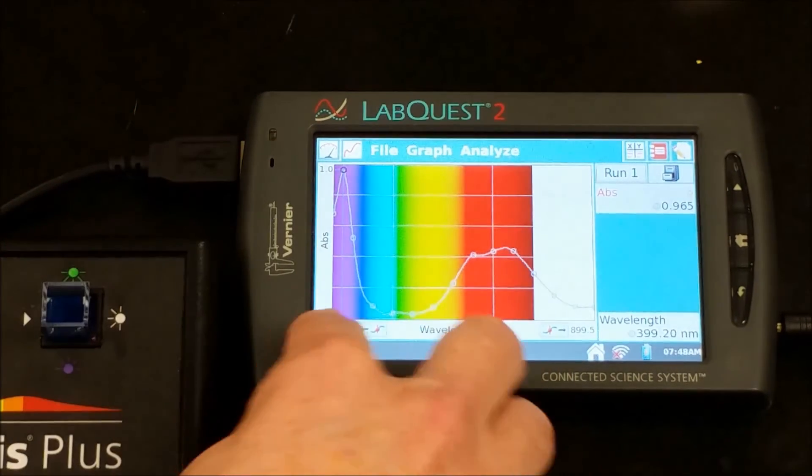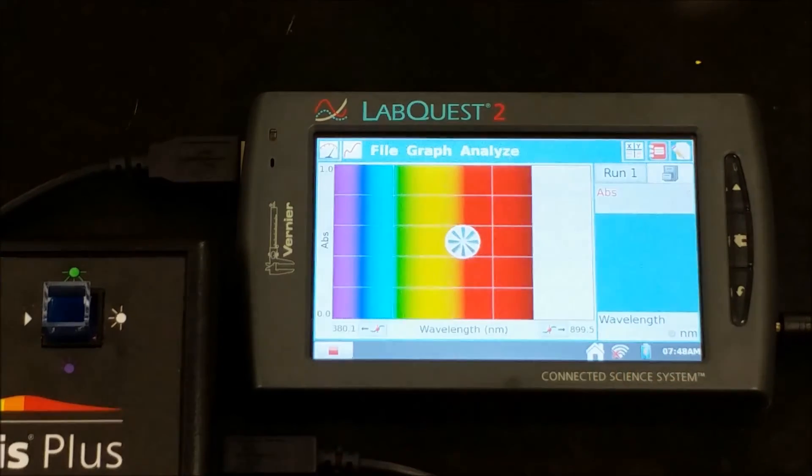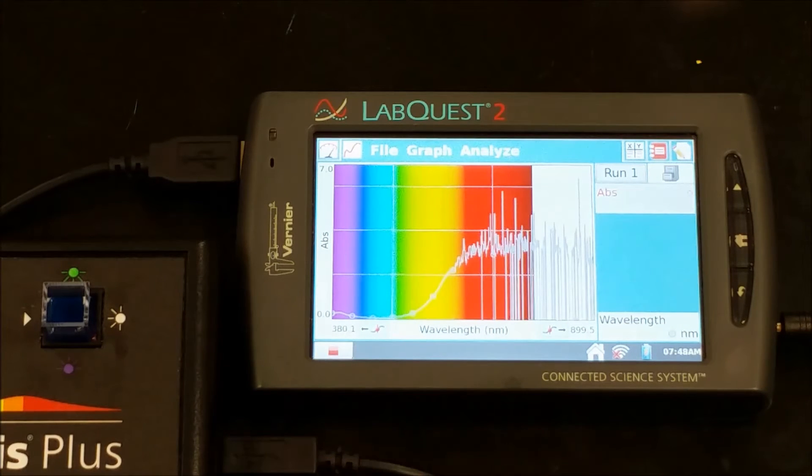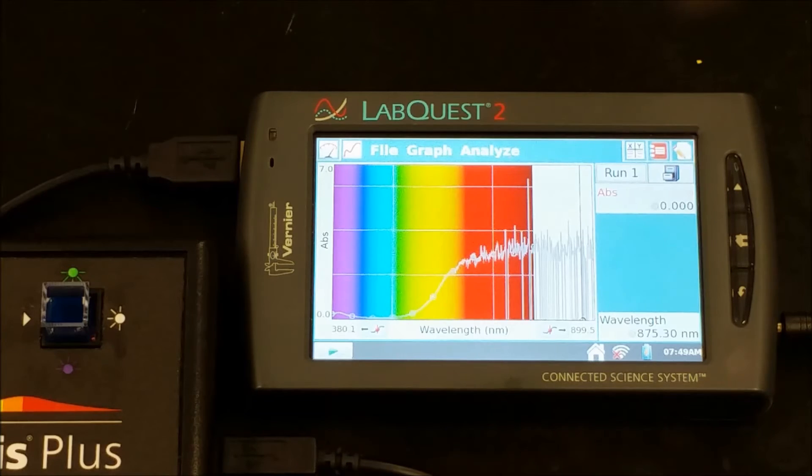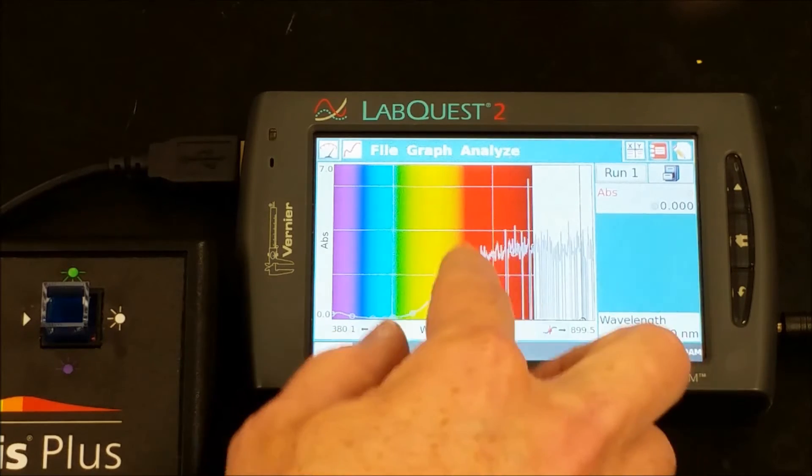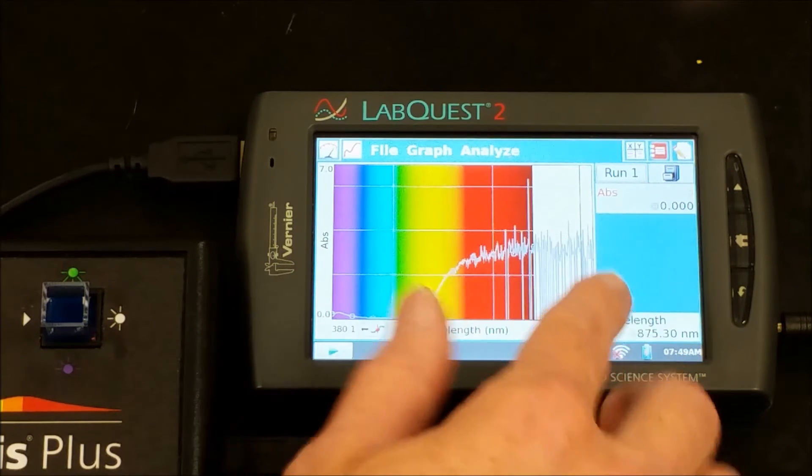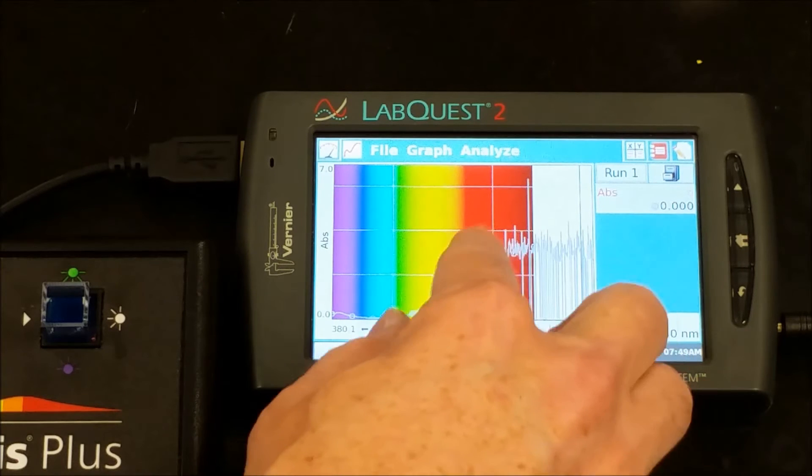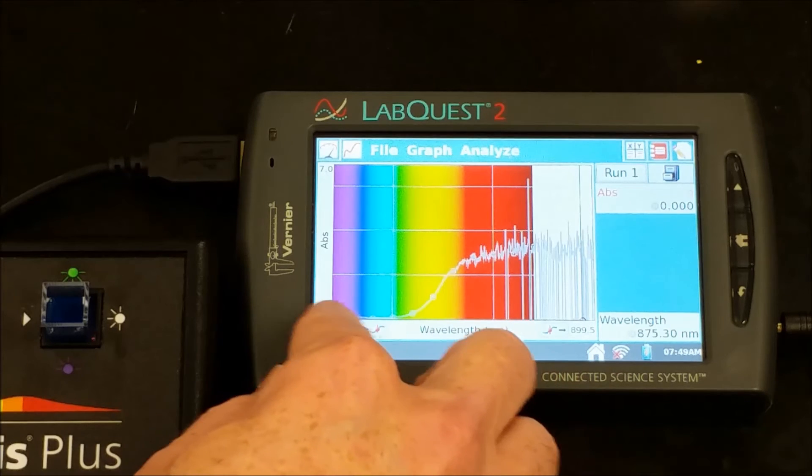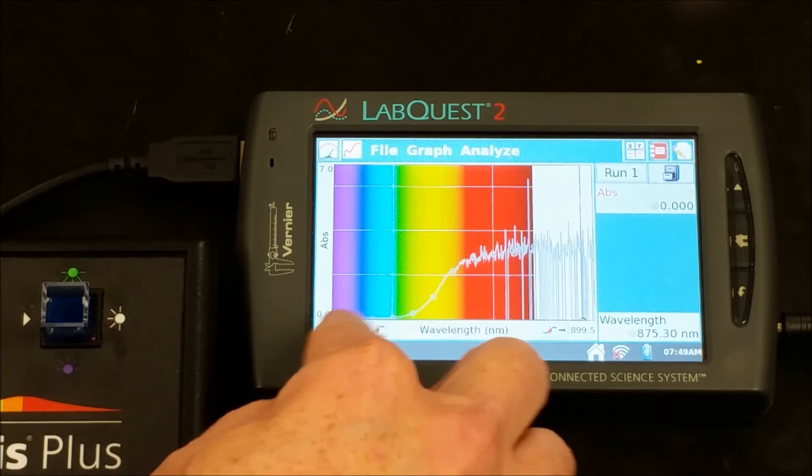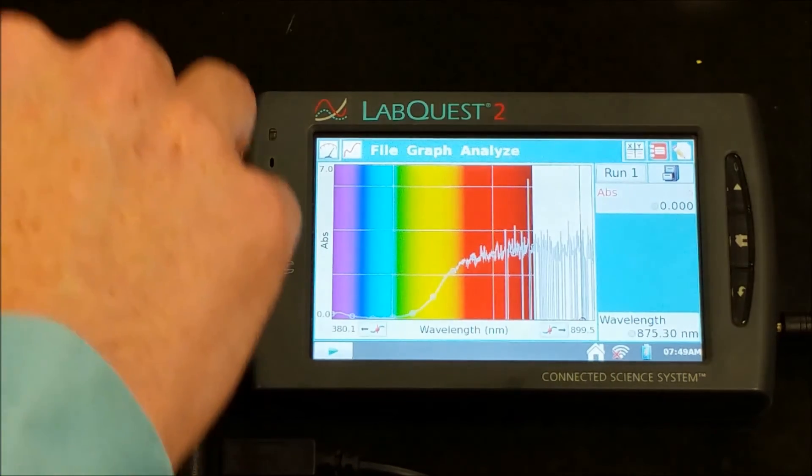For blue, we're seeing a lot of absorption in the red. Looks like it's getting a little fuzzy there, but we're getting a lot of red absorption, a little bit of orange, a little bit of yellow, and then our blue is being transmitted. A little bit of purple being absorbed, but mostly being transmitted, and a lot of green being transmitted.